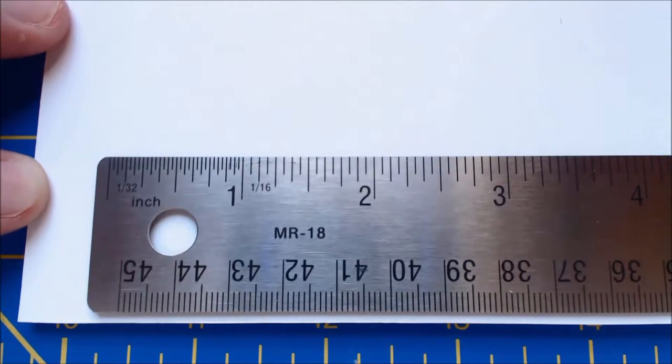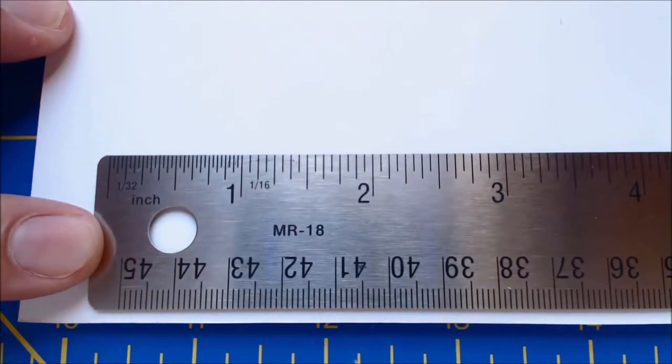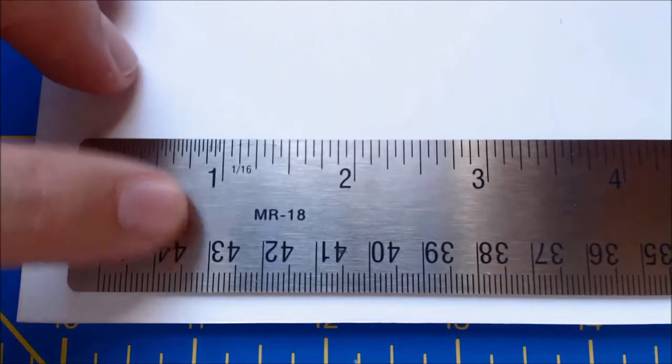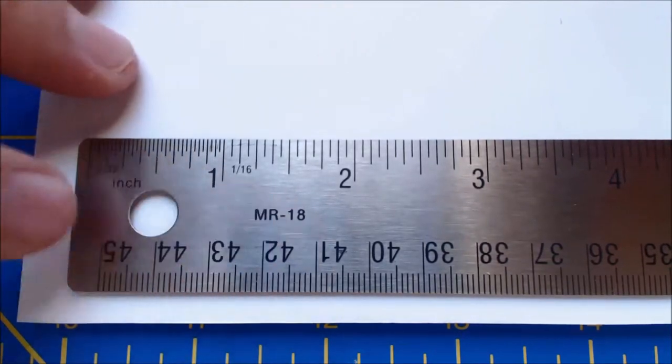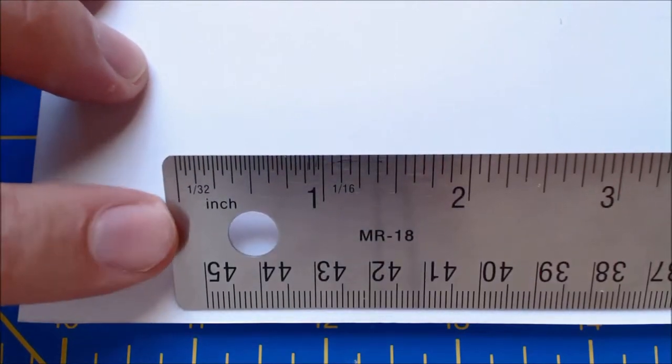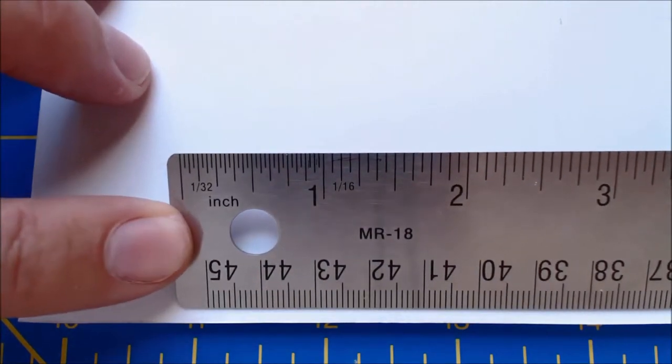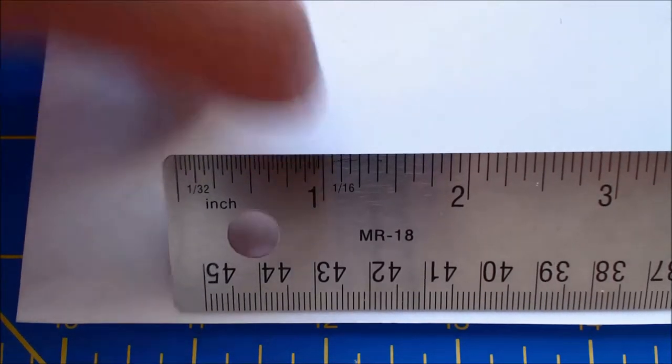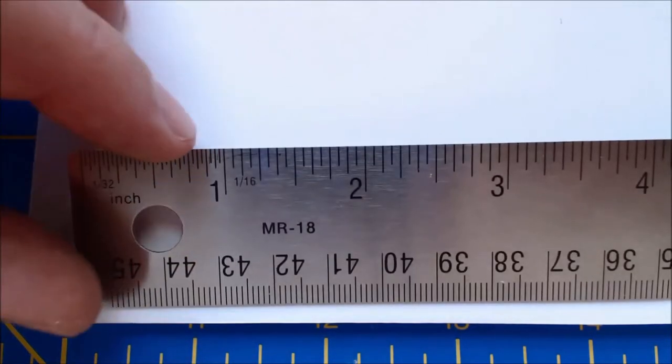Now there's a couple of really simple things to look at when you first start using a new ruler. In this case, we want to know what each of the marks along here means. In the first inch, the marks get ridiculously small from the thirty seconds of an inch. That means there's thirty-two little tiny marks between here and here.